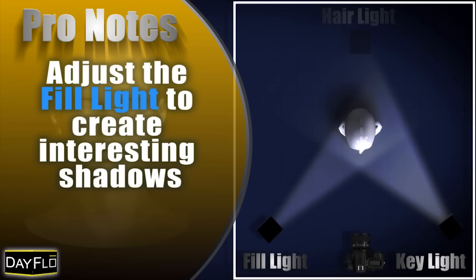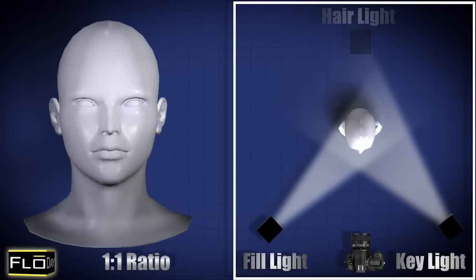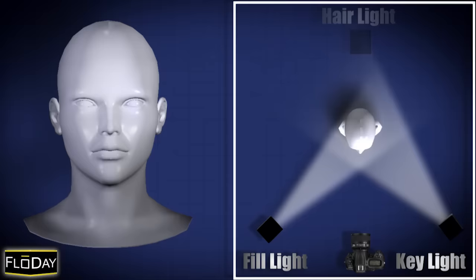The creativity comes in with the variations between key and fill ratios. If you want flat lighting or 1 to 1 ratio, match your fill light source to the same level as your key light. This light pattern is unflattering but commonly used for ID photography, larger groups, families and sometimes engagement portraits.